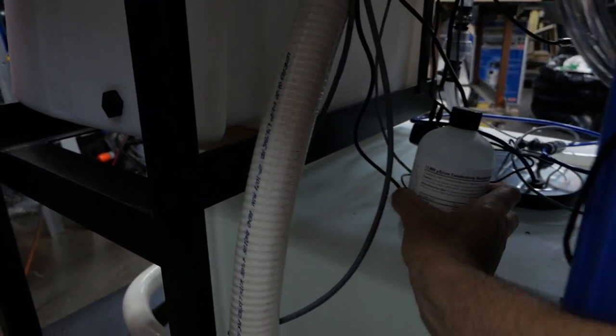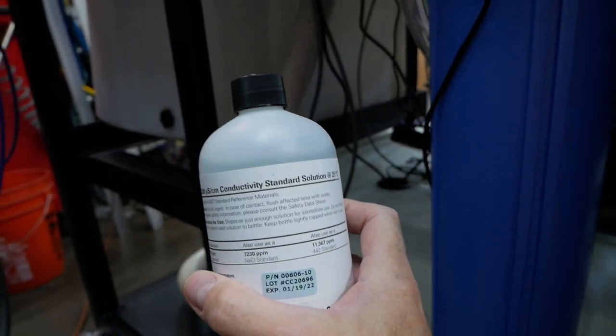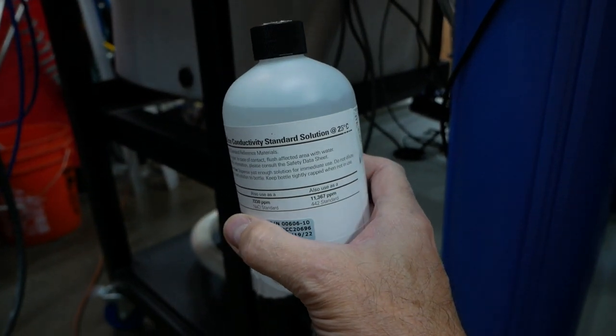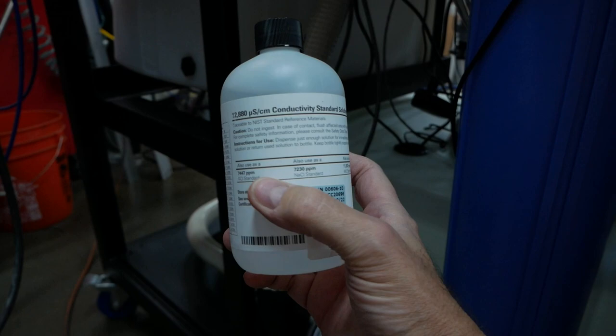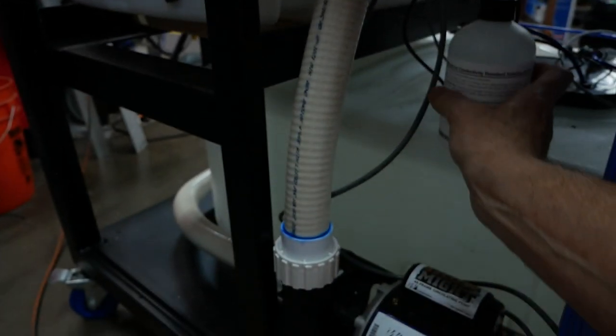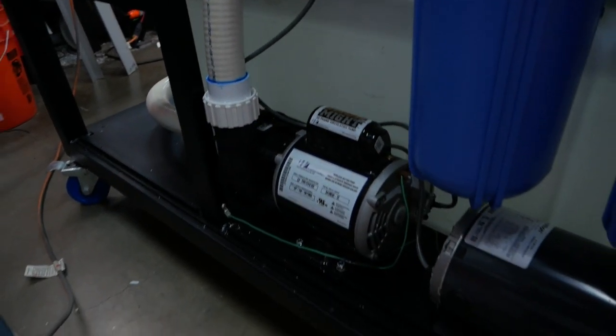And the one thing I was concerned about was that as the water was being pushed through this, that the particulate going into the water would be greater than what this filter could filter out. But that so far that hasn't been the case. Now that may change after I get many hundreds of hours on the machine, but for right now it's working out excellent. I'm really happy with it. This is some calibration fluid that I use for calibrating the micro Siemens controller.